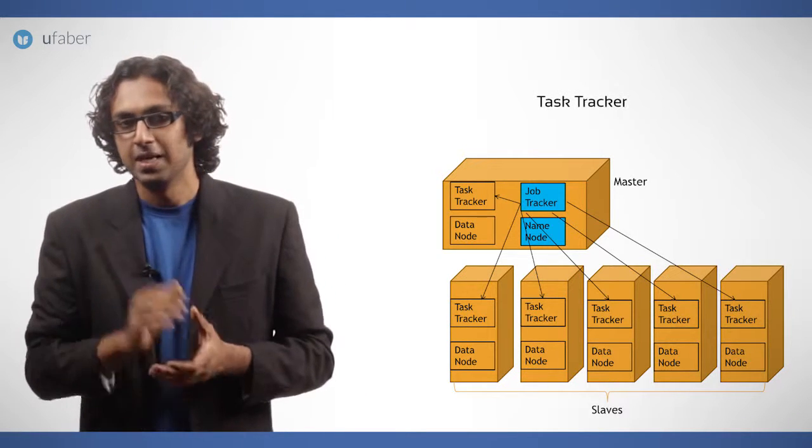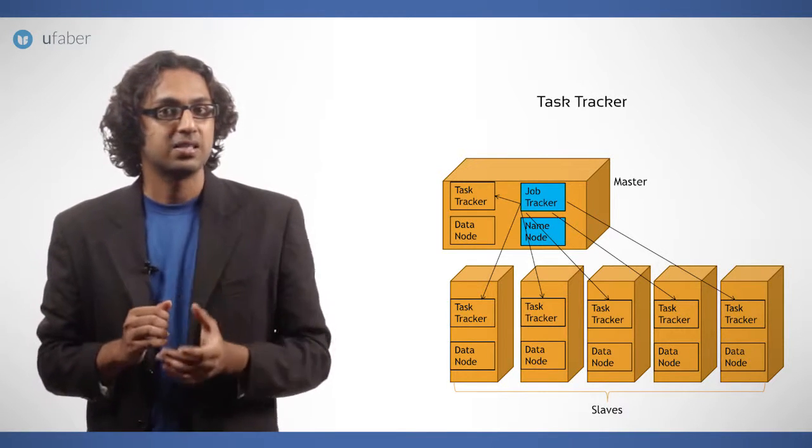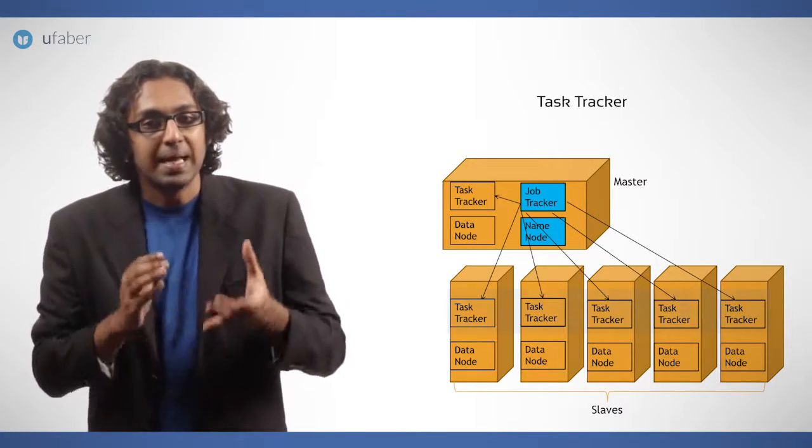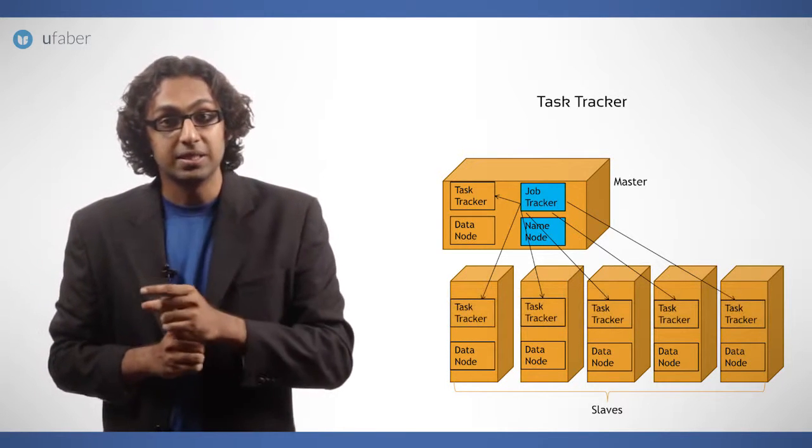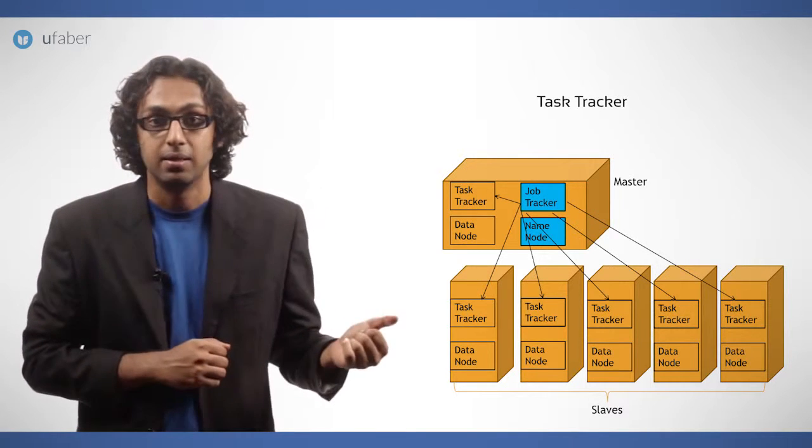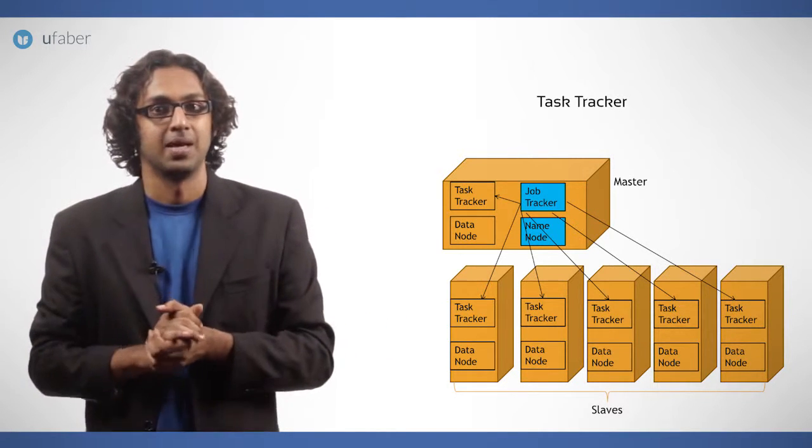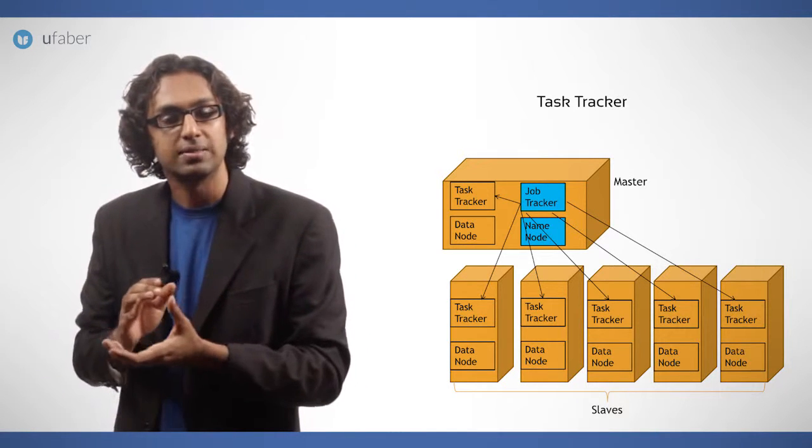Task tracker. This is the MapReduce component on the slave machine. As there are multiple slave machines, many task trackers are available in a cluster. Its duty is to perform computation given by job tracker on the data available on the slave machine. The task tracker will communicate the progress and report the results to the job tracker.